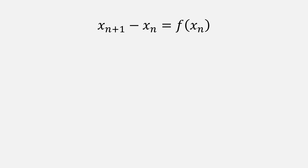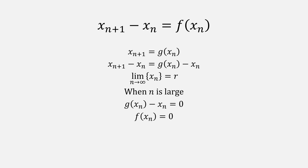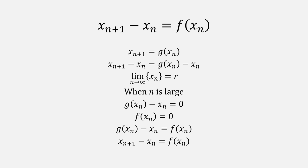First, the numerators. We know that from fixed point iteration, x sub n+1 is equal to g of x sub n. So if you do substitution, we're able to get this form for the equation on the left. We also know that our sequence of x's is eventually going to reach the root, so we can say that when n is large, g of x sub n minus x sub n is going to equal 0, since we're at the root, and the function at that root is also going to equal 0. Therefore, g of x sub n minus x sub n is equal to f of x sub n. If we substitute back, this shows that our numerators are equal to each other.